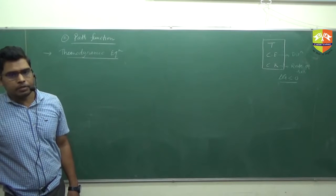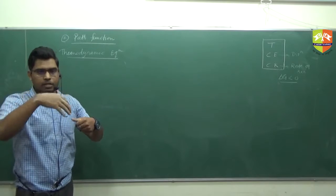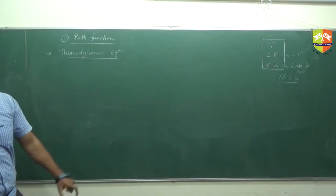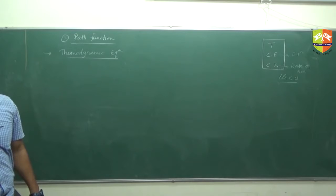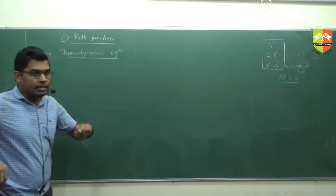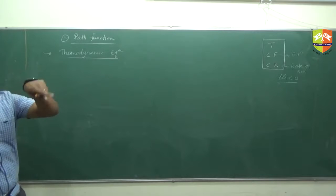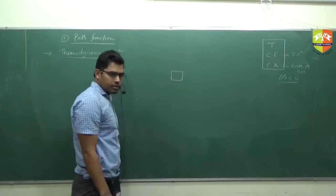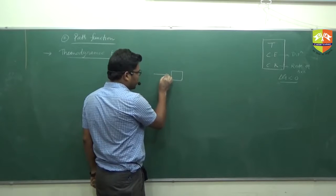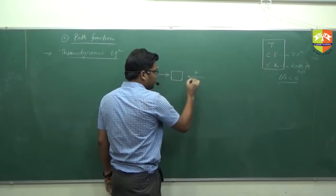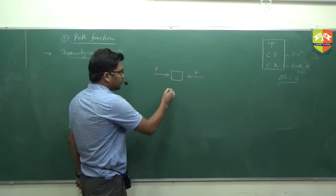Mechanical equilibrium means when the pressure is the same on both sides — if you are applying the same pressure, it is not moving. Suppose you have an object and you are applying the same pressure from both sides, so it won't move — that is mechanical equilibrium. If you apply some force from this direction and the same force from the other side, these two will cancel out each other, so this is in mechanical equilibrium.